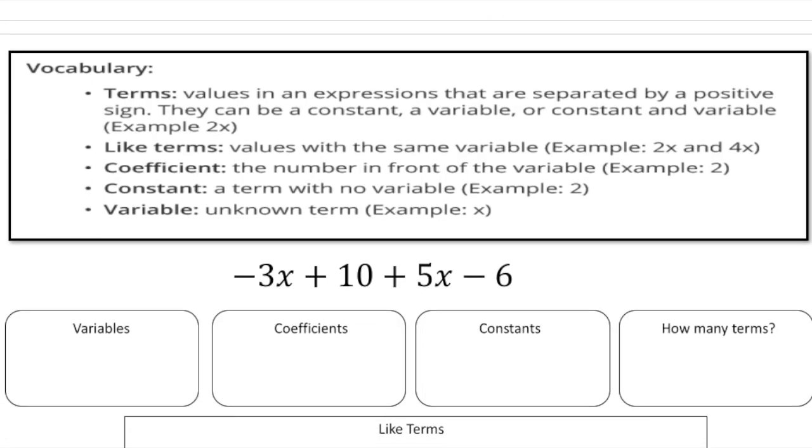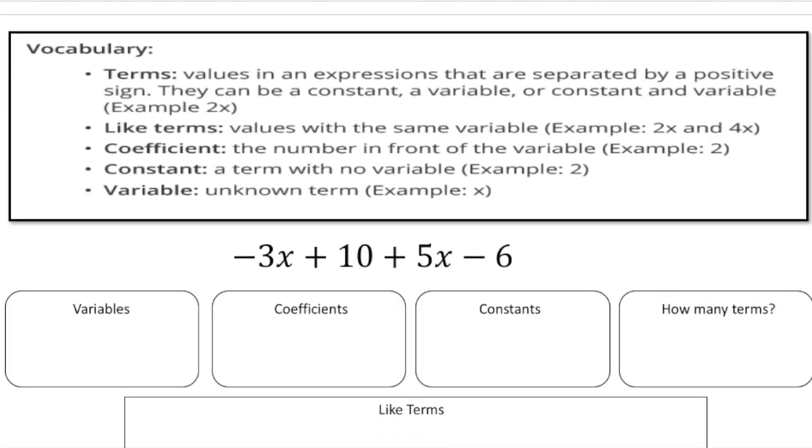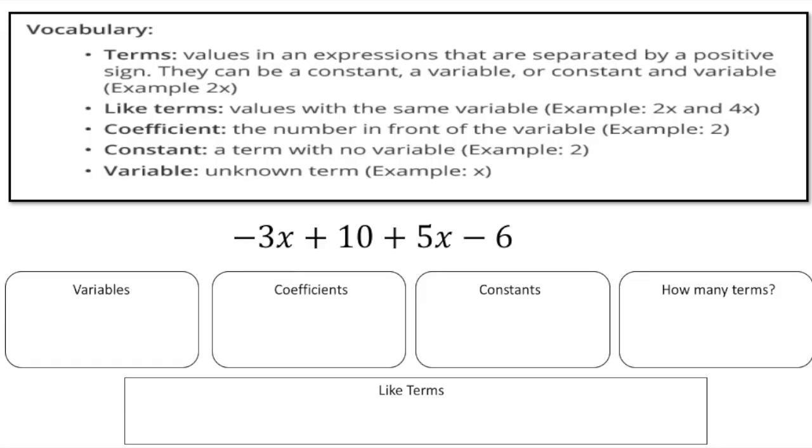And now let's talk about parts of an expression. So here we have negative 3x, plus 10, plus 5x, take away 6. And what I recommend that you do is any subtraction sign that you see, make it a plus.